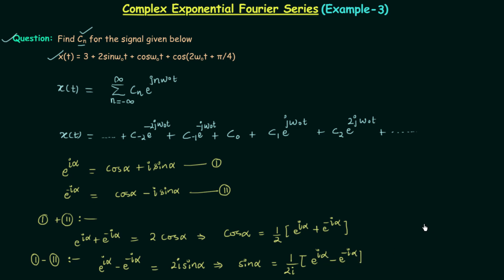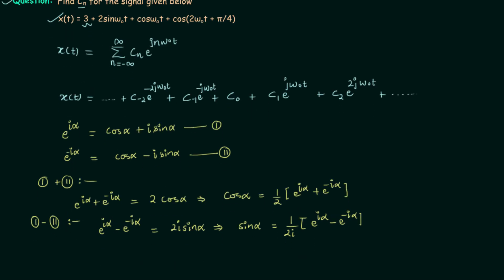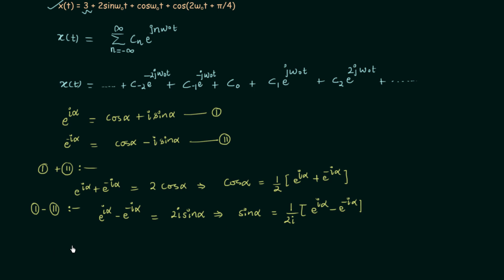The first term is the constant 3 — there is no cosine or sine term along with 3, so we write it as is. The signal xt equals 3 plus the second term, which is twice of sin omega0t. For the sine term we use the sine conversion formula: in place of sin omega0t we write 1 divided by 2j times e raised to power j omega0t minus e raised to power minus j omega0t.